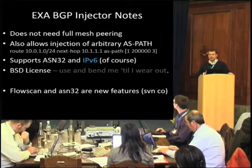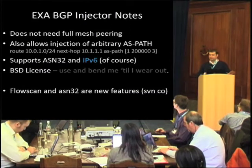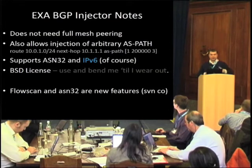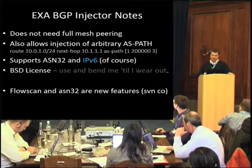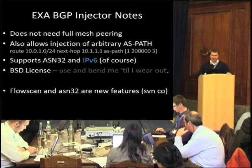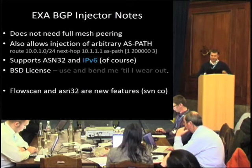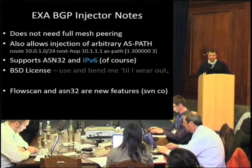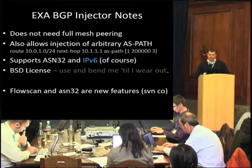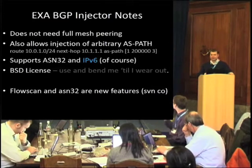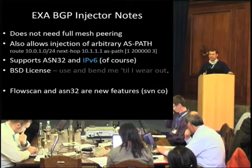Some notes on the software. The diagram at the beginning was a full mesh peering, but you don't actually need that — you can just inject routes to parts of your network or let parts of your network redistribute them. You can inject arbitrary AS paths, and it also supports ASN32 and, of course, IPv6. It's also written with a BSD license, so you can alter it to suit your needs. If you're going to use FlowSpec or ASN32, you need the SVN head version, as those features are quite new, so you can't download the bundle on the site.